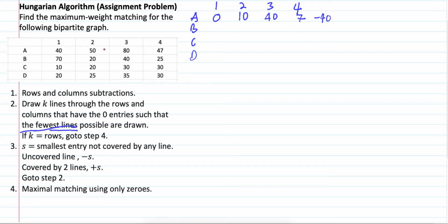Second row. The smallest one is 20. Minus 20. 70 minus 20 is 50. And then, this one is 0. 20 and 5.